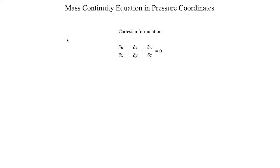Just to refresh your memory on what the mass continuity equation looks like — I'm going to start with the incompressible form for simplicity — that goes: du/dx + dv/dy + dw/dz = 0. That is the form we use in a centered Cartesian grid in terms of x, y, and z coordinates.